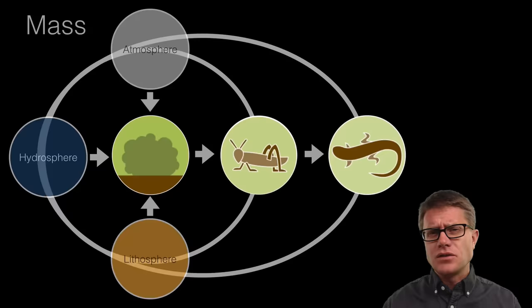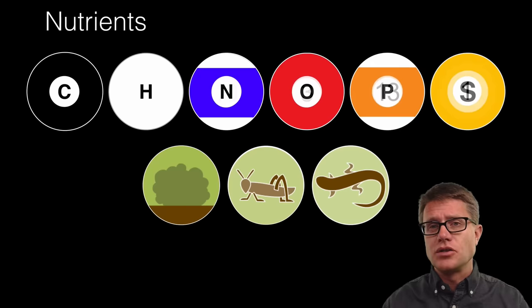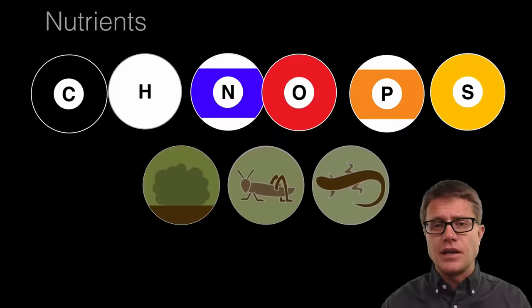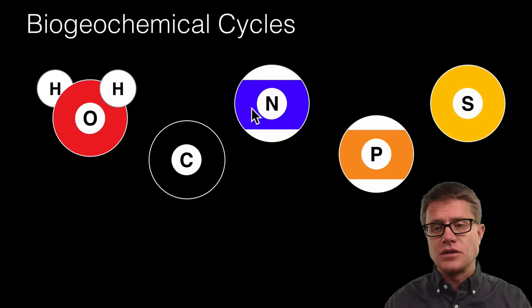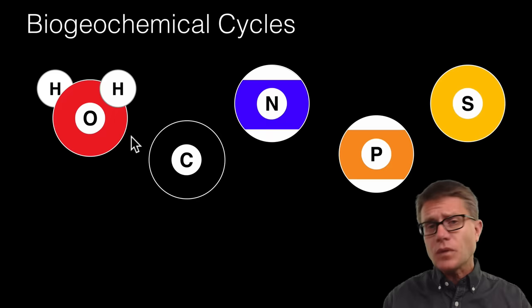And so what are the nutrients that life needs? What are the billiard balls of life? Well a good mnemonic is CHNOPS. Carbon, hydrogen, nitrogen, oxygen, phosphorus and sulfur. If we organize that into the five cycles, we have got the water cycle, carbon cycle, nitrogen cycle, phosphorus cycle and sulfur cycle.